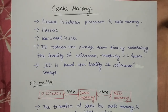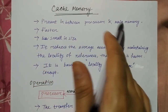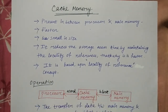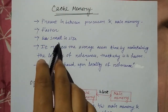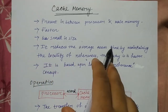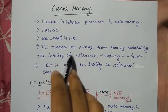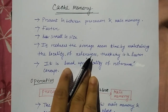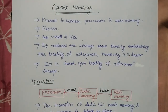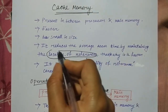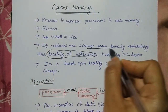Cache memory is faster than main memory, but memory size is slightly smaller. Because it is faster, its cost is also greater. So it is present in between the processor and main memory. It reduces the average access time by maintaining the locality of reference — that is why it is faster.